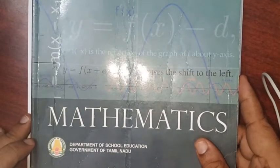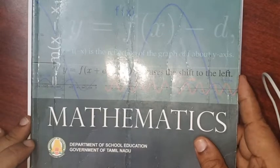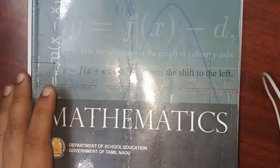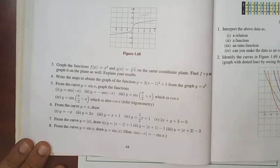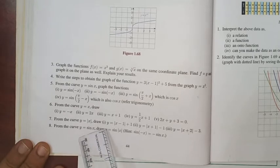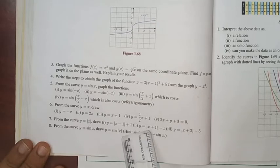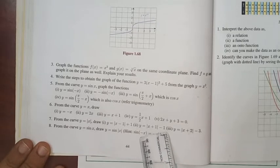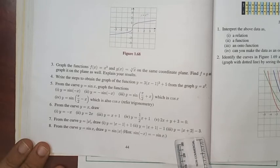This is Sivakumar, 11th standard mathematics, chapter number 1, continuation of exercise 1.4, problem number 7. From the curve y = |x|, draw: y = |x - 1| + 1, y = |x + 1| - 1, and the third one y = |x + 2| - 3.